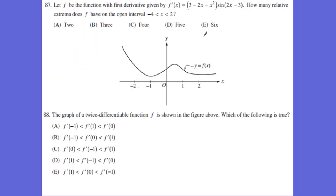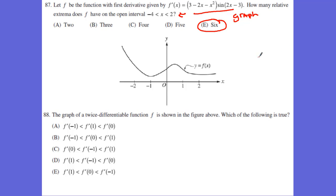For problem 87, we can still use our calculator. The best thing to do with this function is graph it, change your window to that interval, and you can see it crosses the x-axis six times on that graph.